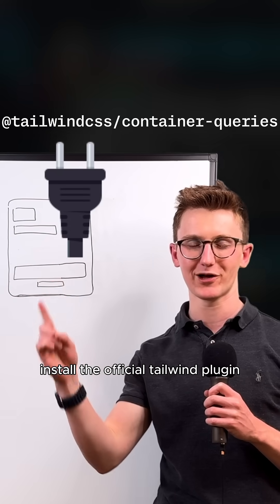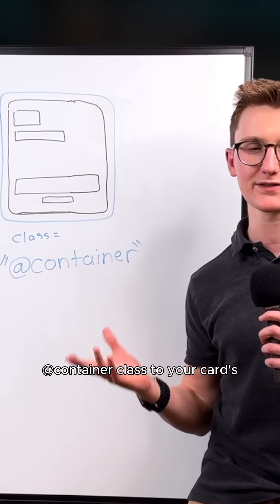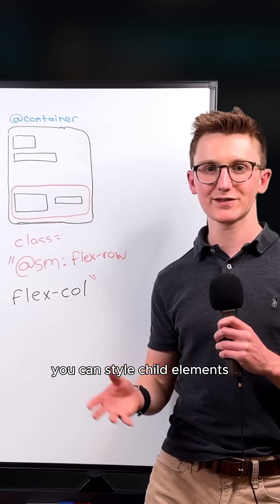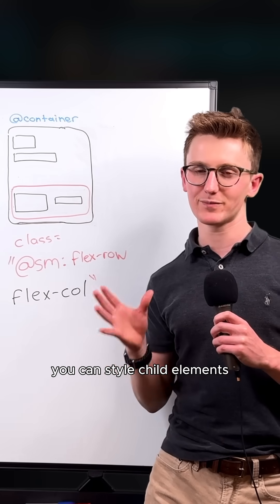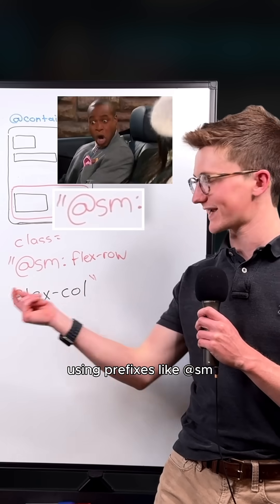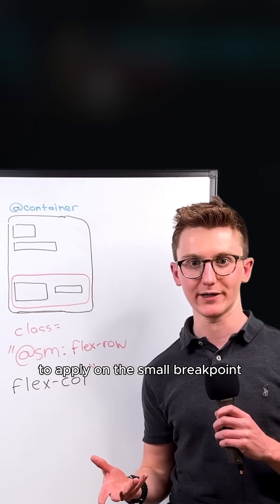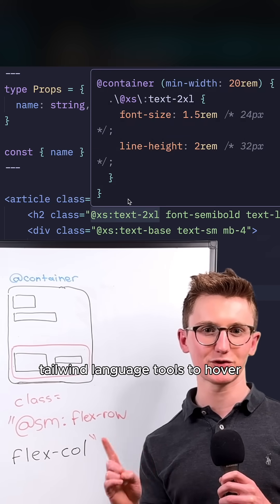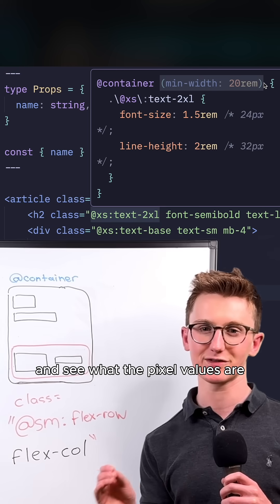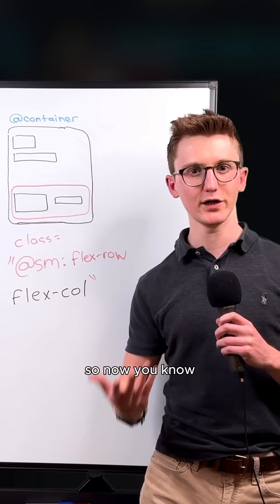Install the official Tailwind plugin and you can apply the `@container` class to your product card's wrapper element. Then you can style child elements based on the parent's width using prefixes like `@sm` to apply styles on the small breakpoint. I recommend the Tailwind language tools to hover and see what the pixel values are, since they're a little different than the screen breakpoints. So now you know.